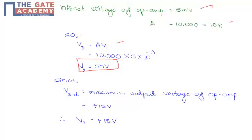Since V_sat will be equal to the maximum output voltage of the op-amp, it will be equivalent to plus-minus 15 volts. Therefore, V₀ equals 15 volts.